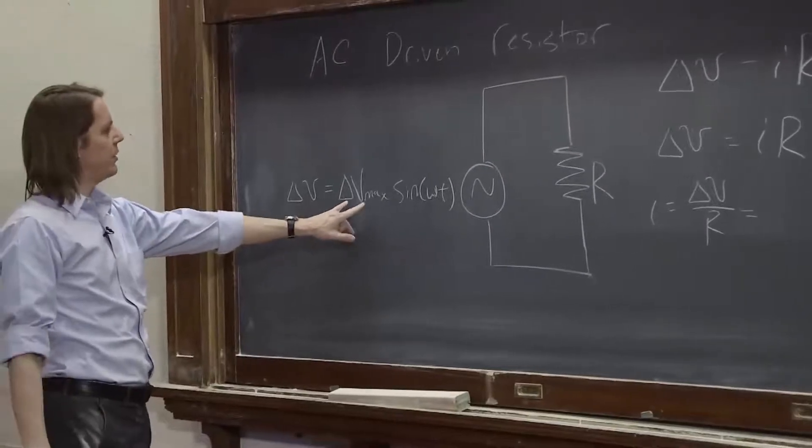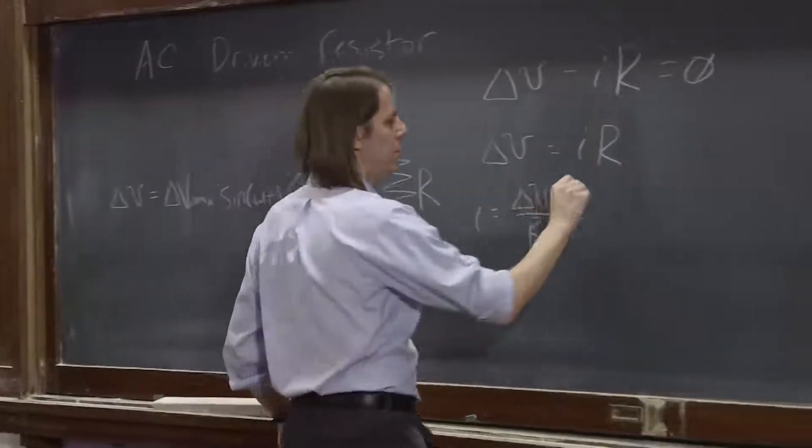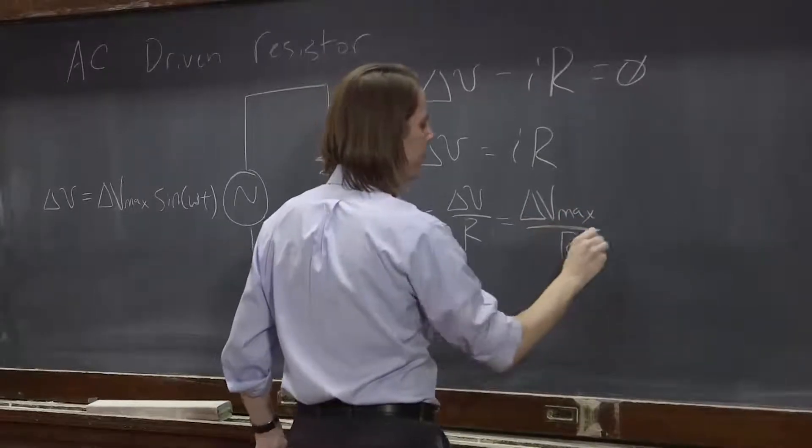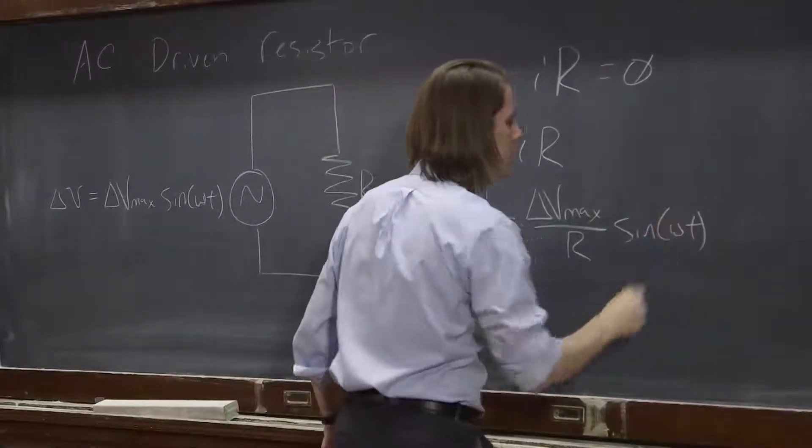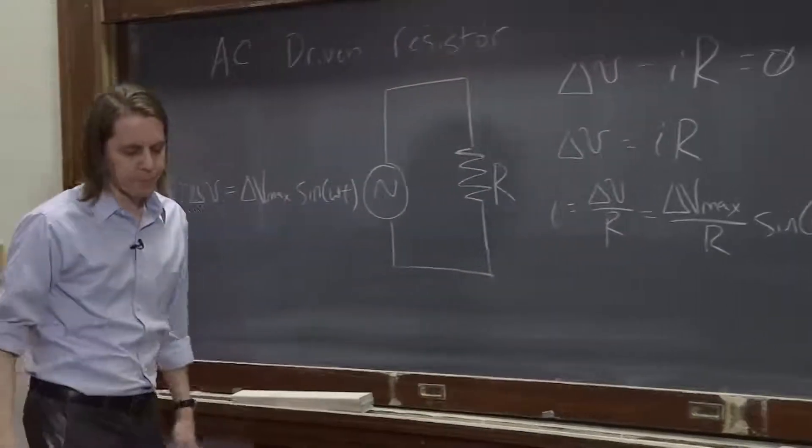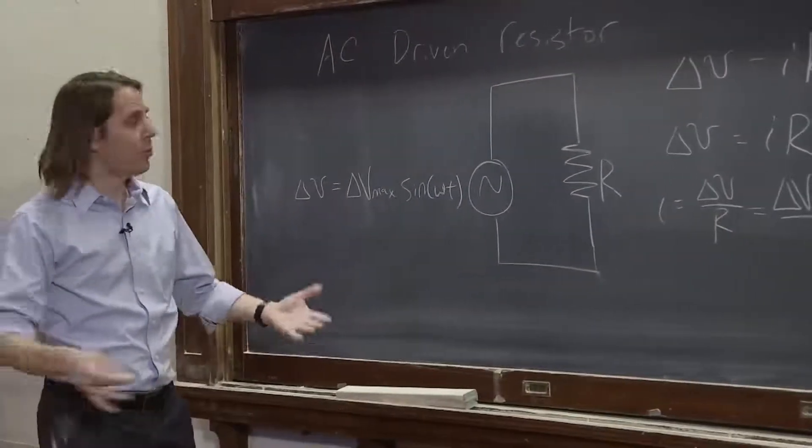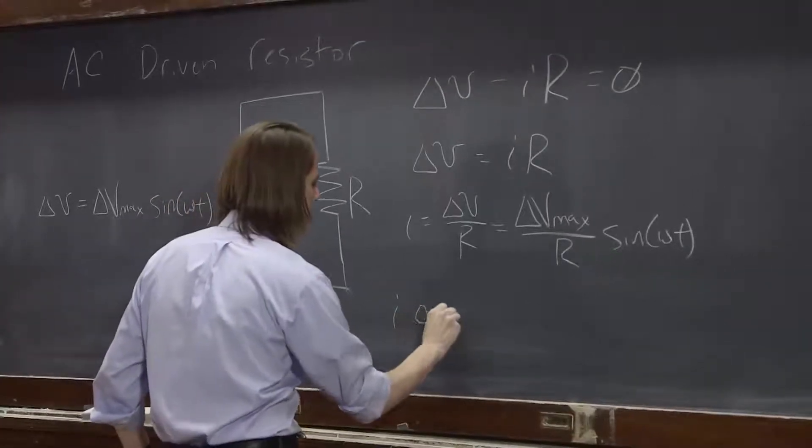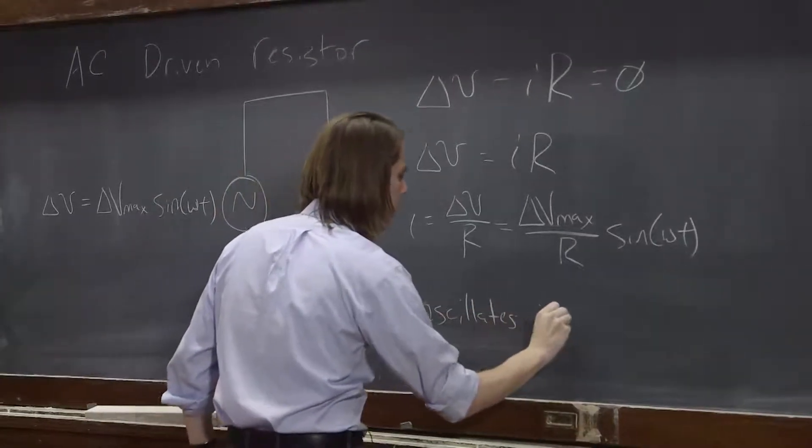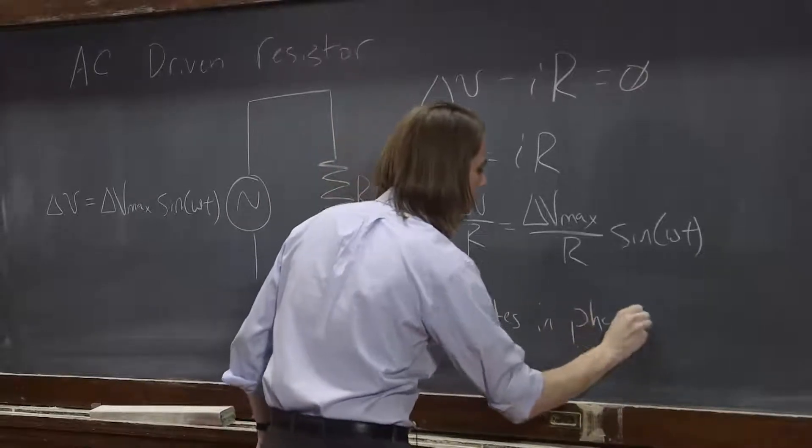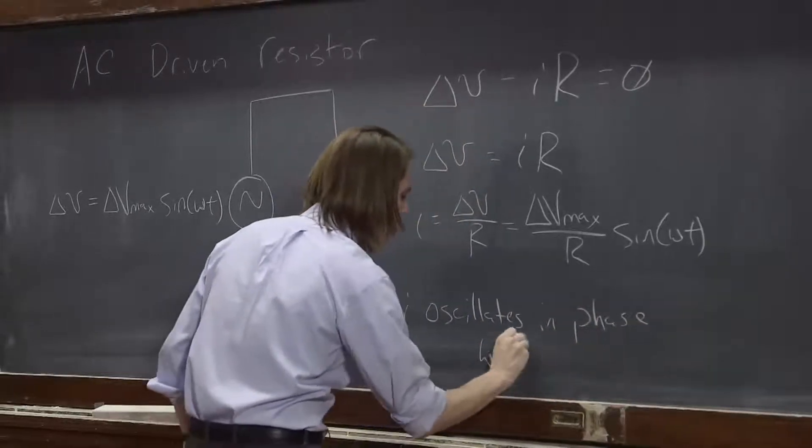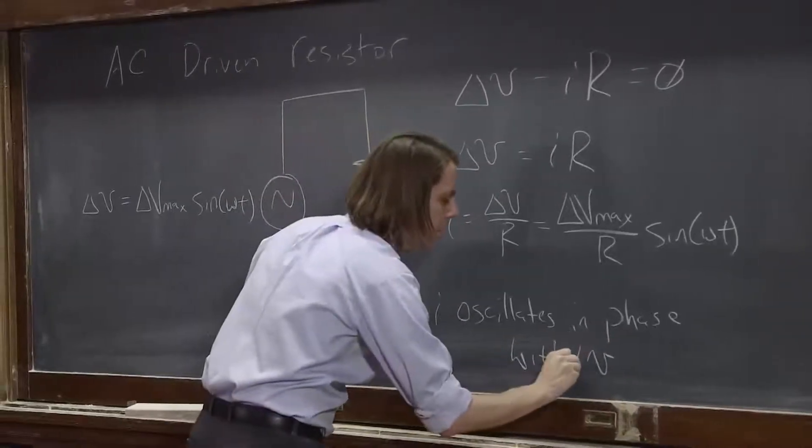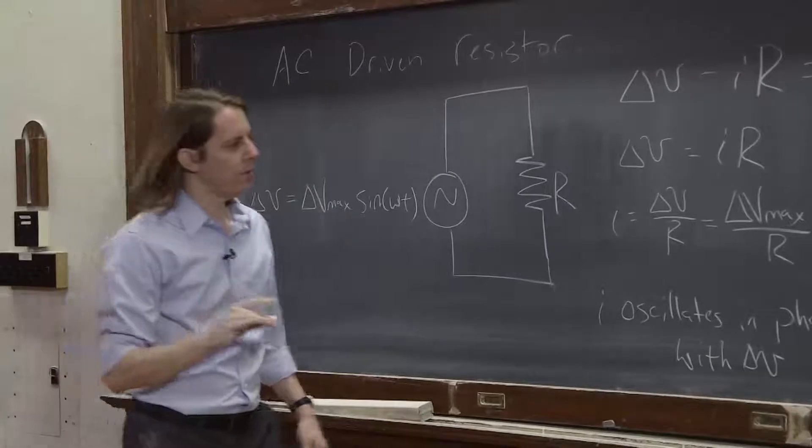And we can then write it out. Well, this is delta V, so it's delta V max, the amplitude, over the constant R sine omega T. So we get the simple result for this circuit that I, the current, oscillates in phase with the little delta V.